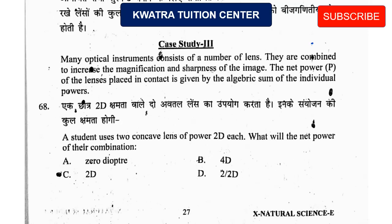Case study 3: Many optical instruments — like microscopes and telescopes — consist of a number of lenses. Instead of one lens, many lenses are used to increase magnification and sharpness of the image. The net power of the combination is calculated by adding all the individual powers together. Based on this concept, we will answer the following questions.